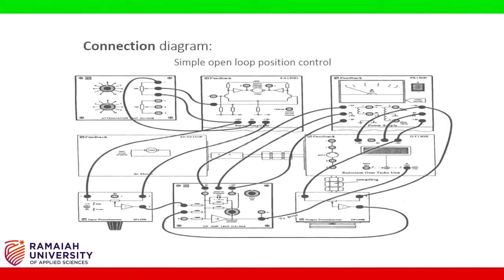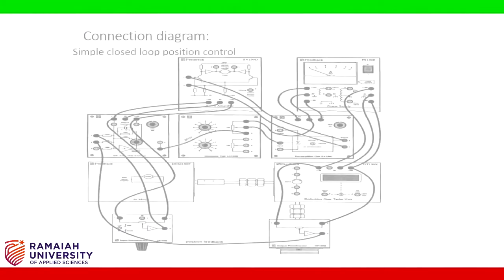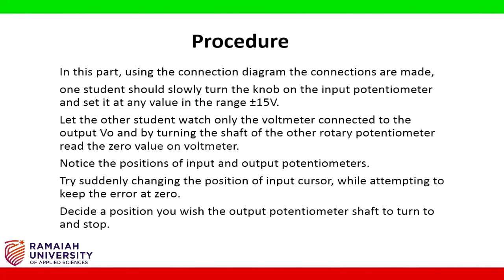The connection diagram for a simple open loop position control of a DC motor is as shown. The procedure of a simple open loop position control experiment: using the connection diagram, the connections are made first.